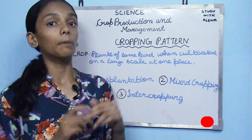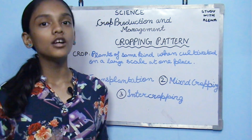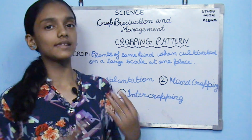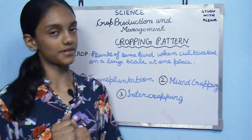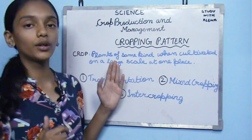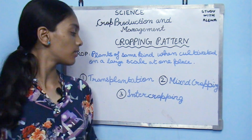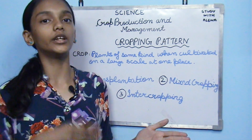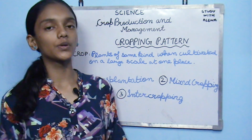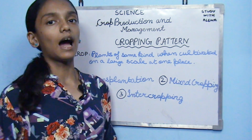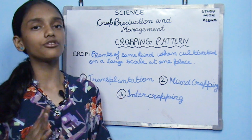Before discussing cropping patterns, let me define what a crop is. A crop is basically the same kind of plant grown on a large scale at the same place. Now, cropping pattern — which is given incorrectly in the NCERT — refers to the different methods or ways in which we plant crops.